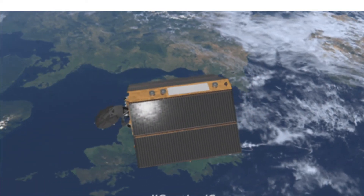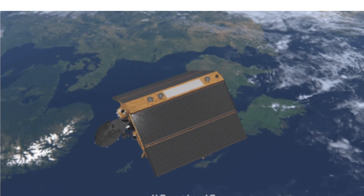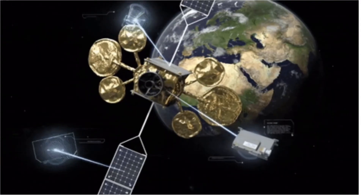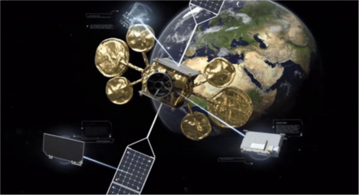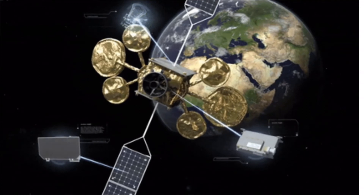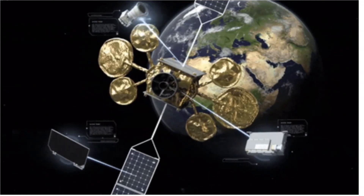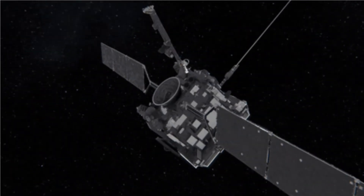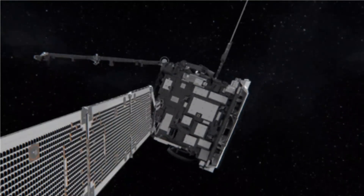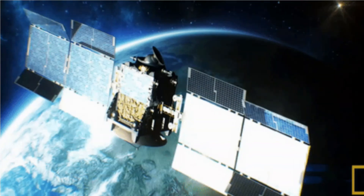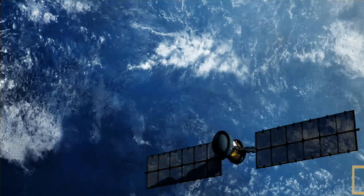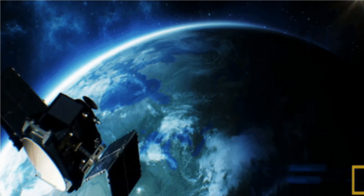According to Relativity Theory, a moving clock appears to run slow with respect to a similar clock that is at rest. The satellites are constantly moving relative to an observer on the Earth, which causes them to run at a slightly faster rate than a clock on the Earth's surface. A calculation using General Relativity predicts that the clock in each GPS satellite should get ahead of ground-based clocks by 45 microseconds per day.